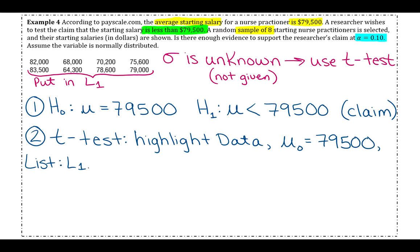and then you'll fill out the stuff that it wants. So mu naught is going to be 79,500. For the list, if you put your stuff in L1, then just keep it as L1. If you used another one, then just tell it whatever you used. Frequency, remember we always just leave that as 1. Don't touch it. And then make sure you select the less than mu naught. And then calculate, and we'll get our p-value. Round to four decimal places. So that's 0.0597.